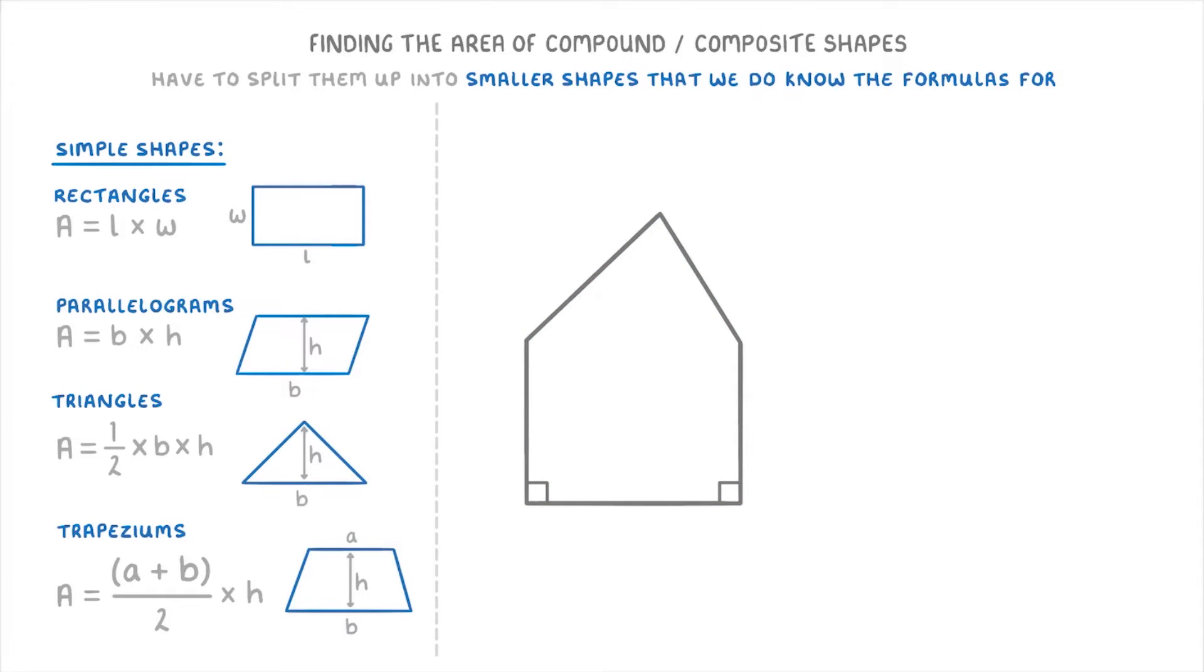Let's start with this one in the middle and add some measurements so that we can work through it. The first thing to spot here is that if we draw a horizontal line across the top here, then we can split this shape into a rectangle at the bottom and a triangle at the top. So then all we need to do is find the area of each of them and add the two together.